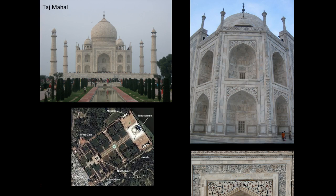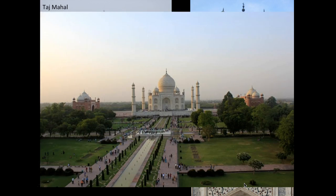The use of the landscape was very intentional. The gardens are designed to evoke paradise, and in Shah Jahan's time they would have been planted with fruit trees and cypress trees. Fruit trees are symbolic of life, and cypress trees are symbolic of death — fitting for a structure that is a tomb.